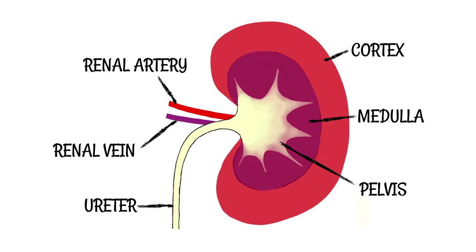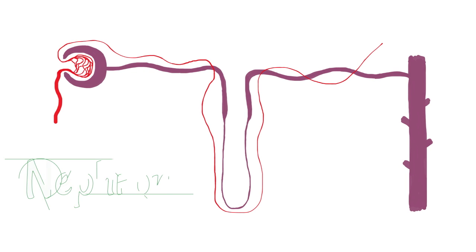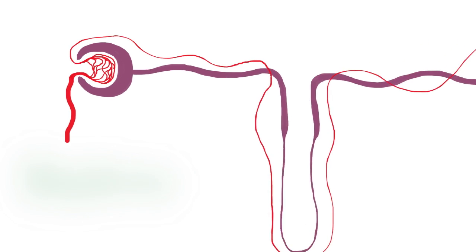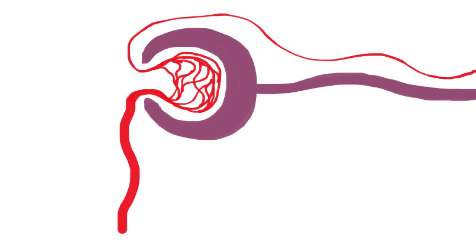Inside the kidneys we've got lots and lots of tiny little structures which are known as nephrons. Inside each kidney there might be about a million of these things — they're really, really small. Let's look closer at the first step of the nephron.